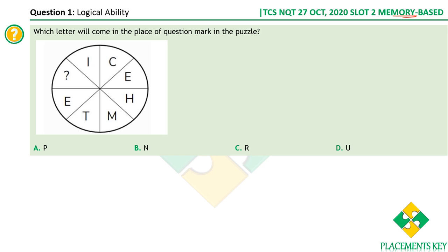Let's look at the first question: which letter will come in place of the question mark in the puzzle? Whenever we look at alphabets, it's always better to replace them with their corresponding position numbers so that it's easy to compare numbers rather than alphabets. After replacing, you get 9, 3, 5, 8, 13, 20, and then E — which I'm also writing as 31.